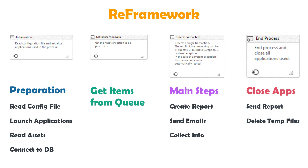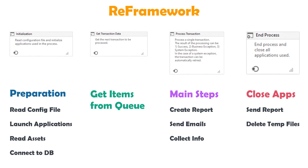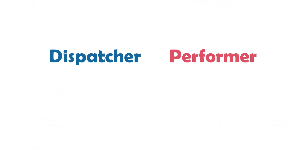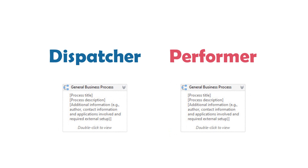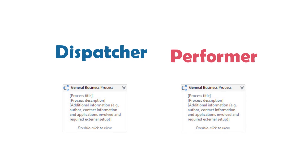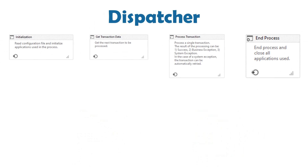This is a general explanation of each state in a REFramework. We want to implement two processes: dispatcher and performer. How should we do it? First we have to create a REFramework for each process — this means we have two REFrameworks, one for dispatcher and one for performer. Let's begin with the dispatcher. We have here the four states. Let's take the same example of sending emails to people — how can we implement this example here? In the first state we can do the preparations.